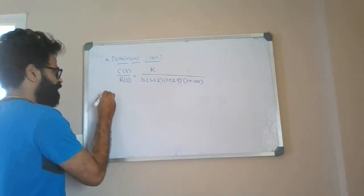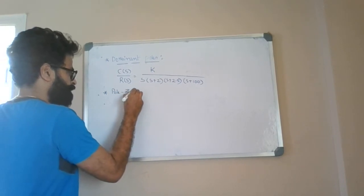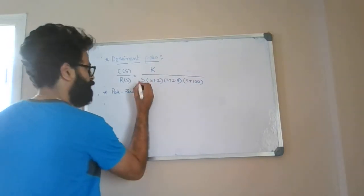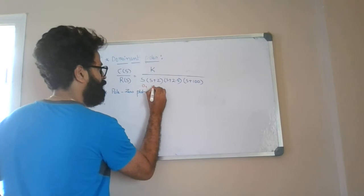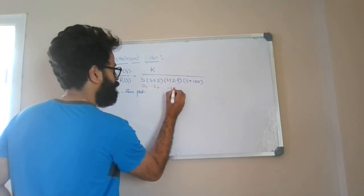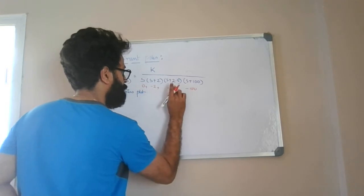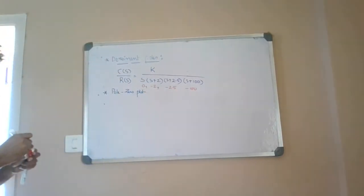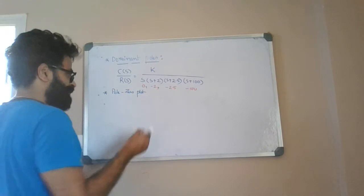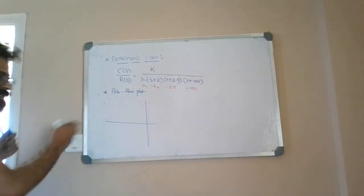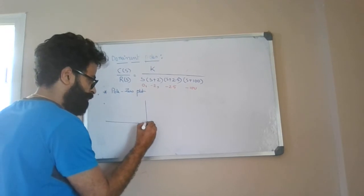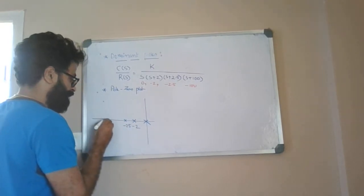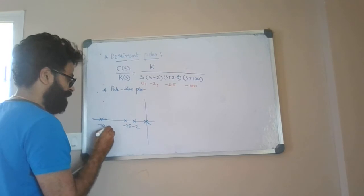To understand dominant force, first let us draw the pole-zero plot. We have poles at 0, minus 2, minus 2.5, and minus 100. Let us place these poles in the complex s-plane — all poles are found on the left-hand side of the s-plane: at the origin, at minus 2, at minus 2.5, and at minus 100.